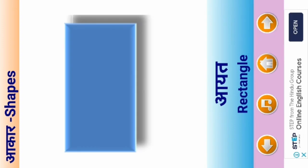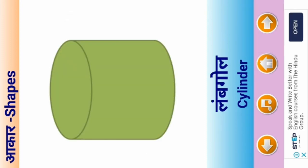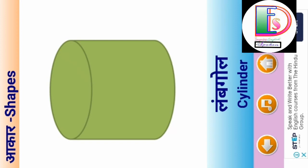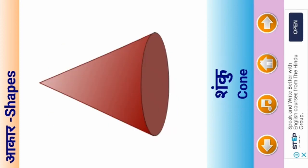Triangle means Tricone. R.E.C.T.A.N.G.L.E. Rectangle means Ayat. C.Y.L.I.N.D.E.R. Cylinder means Lumbagol. C.O.N.E. Con means Shanku.